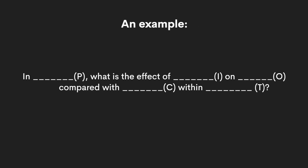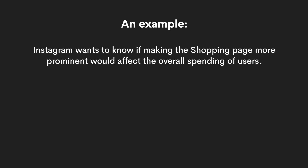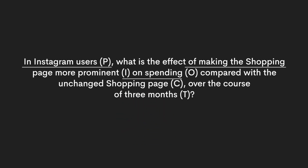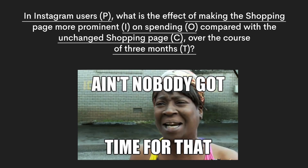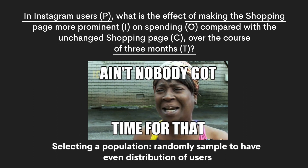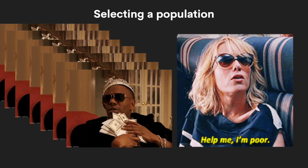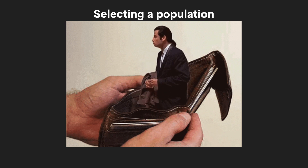Let's take a real data science interview question from Facebook as an example. Instagram wants to know if making the shopping page more prominent would affect the overall spending of users. Using PICOT: in Instagram users, what is the effect of making the shopping page more prominent on spending, compared with the unchanged shopping page, over the course of three months? You probably won't have resources to test the entire population, so you need to randomly sample to ensure a good, even distribution of users — for instance, you don't want a group that happens to be all millionaires, as they would skew your results.